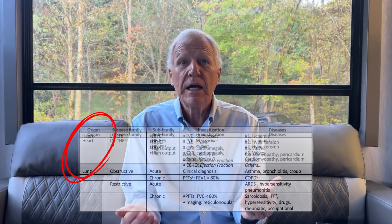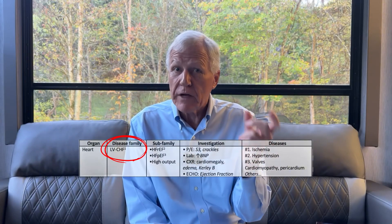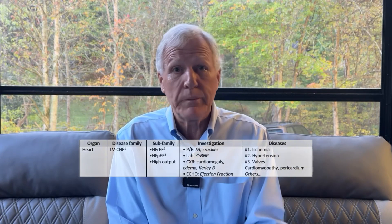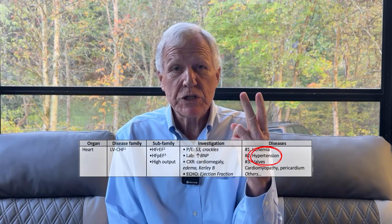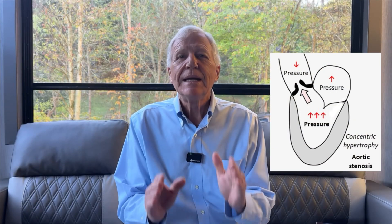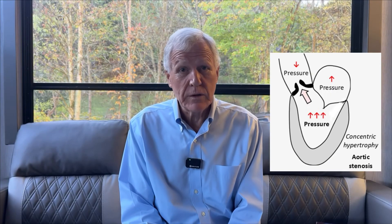Let's take shortness of breath as an example — two organ systems: heart and lung. If it's heart, it's going to be the major family of left ventricular congestive heart failure. In America, 80% of congestive heart failure will be ischemia, hypertension, or valves. Today's discussion: you heard a murmur, so we're in valves. Valves are going to be mitral or aortic, and even aortic valves have stenosis and regurgitation.